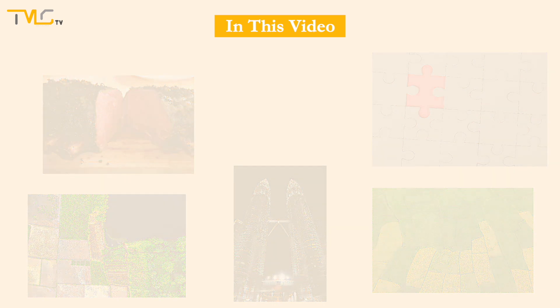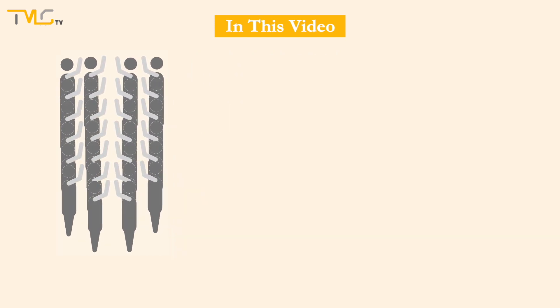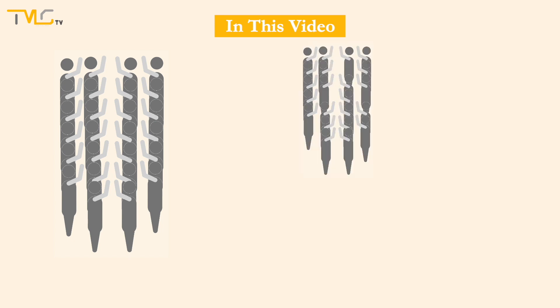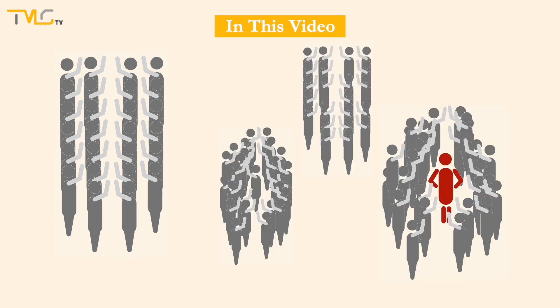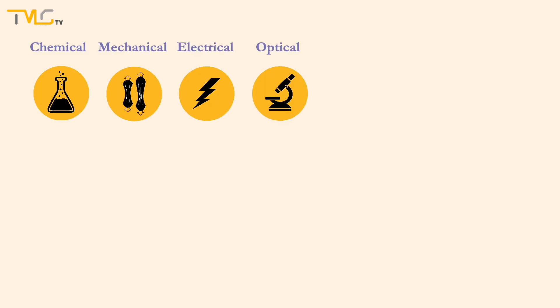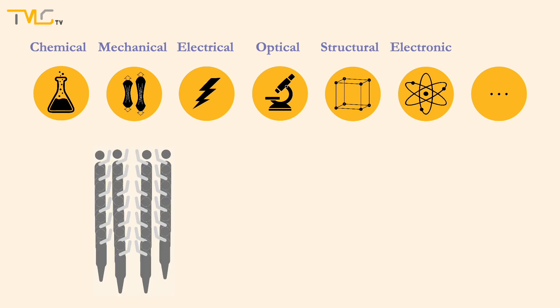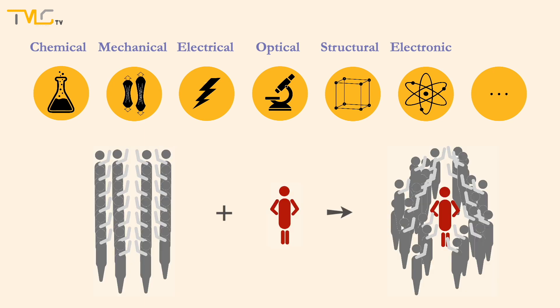Let us define what an imperfection is. The crystal structures mentioned in the previous videos are, most of the time, ideal cases. However, in reality, what we see is slightly different. There are many defects in crystalline structures. These defects have significant effects on the chemical, mechanical, electrical, and other properties of materials. Sometimes we implement defects in a controlled manner to crystal structures for improving the desired properties of a material.